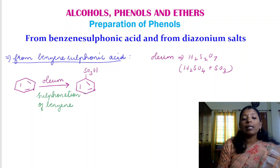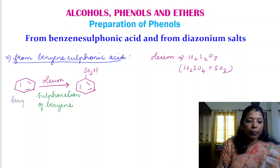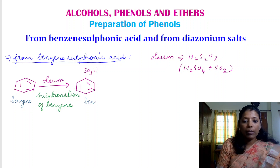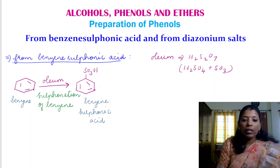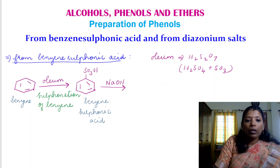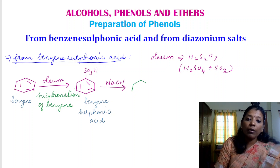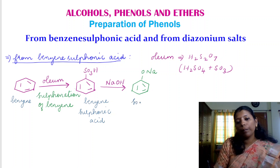I'll write the names here so it will be easy to remember. This is benzene and this is benzene sulfonic acid. This benzene sulfonic acid is first treated with sodium hydroxide, and it is converted into sodium phenoxide.